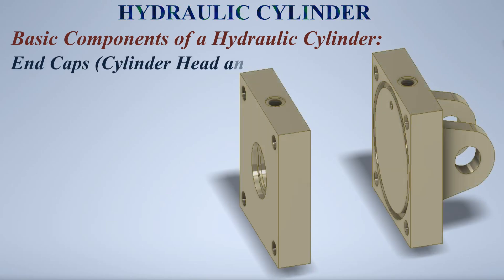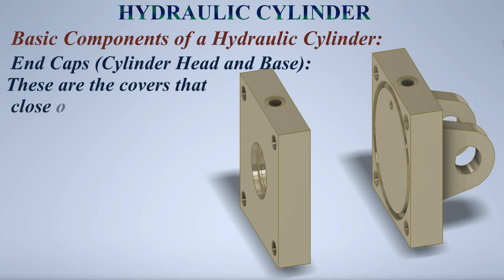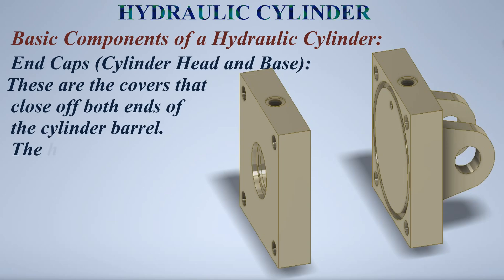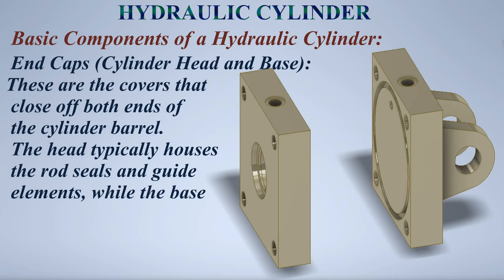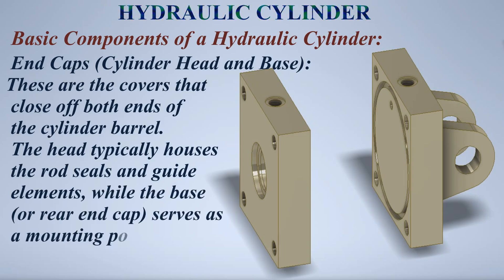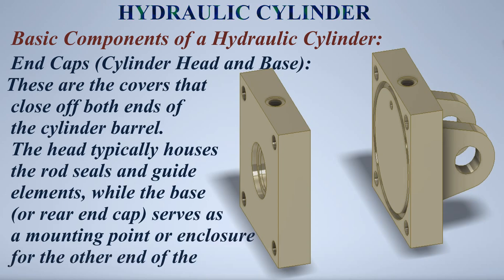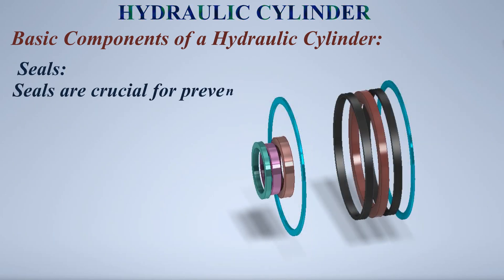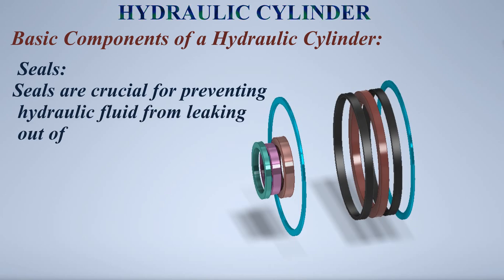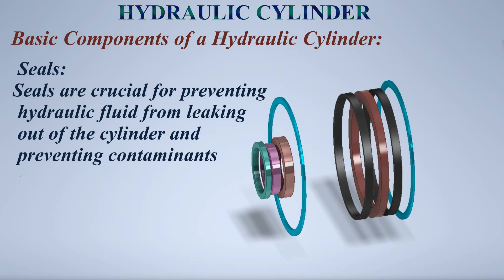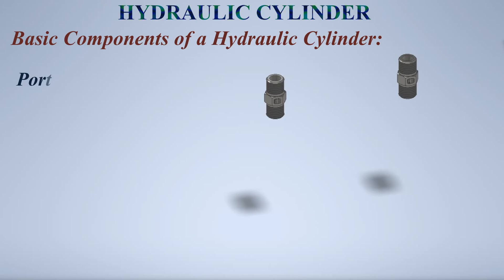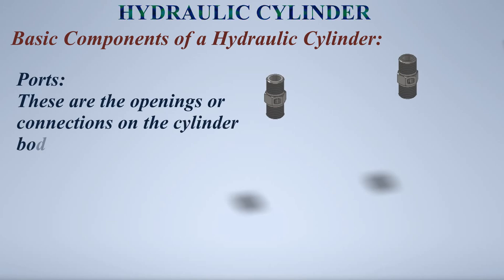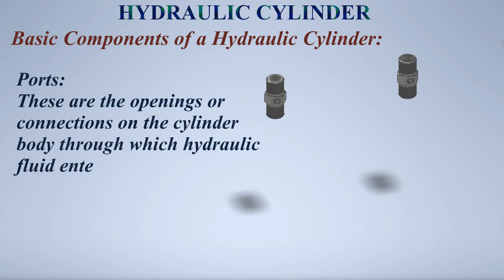End caps, cylinder head and base: these are the covers that close off both ends of the cylinder barrel. The head typically houses the rod seals and guide elements, while the base, or rear end cap, serves as a mounting point or enclosure for the other end of the cylinder. Seals: seals are crucial for preventing hydraulic fluid from leaking out of the cylinder and preventing contaminants from entering. Ports: these are the openings or connections on the cylinder body through which hydraulic fluid enters and exits.